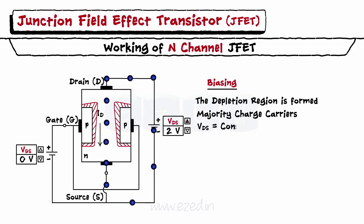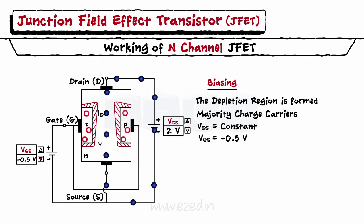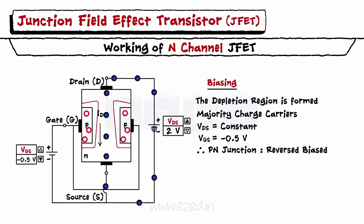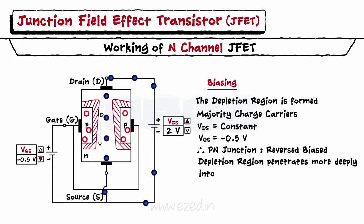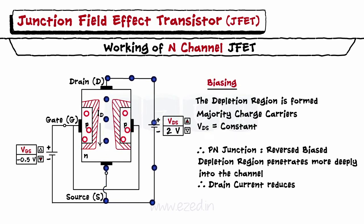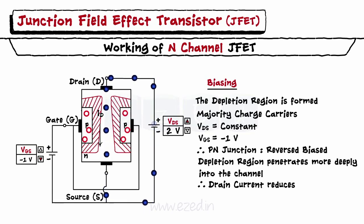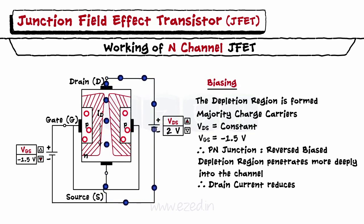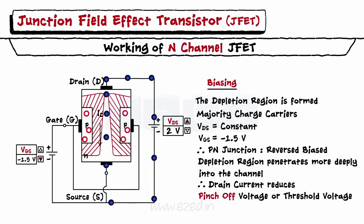Now, let's keep the VDS constant and apply some gate-to-source voltage. The P region contains holes. Applying a negative voltage to the gate makes the P-N junction reverse biased. The depletion region width increases and it penetrates more deeply into the channel, decreasing the channel width and thus the drain current reduces. If we increase the gate voltage towards a more negative side, the depletion region keeps increasing and a point comes when the channel gets depleted completely. The value of VGS at this point is called the pinch-off voltage or threshold voltage, and the current flow stops.